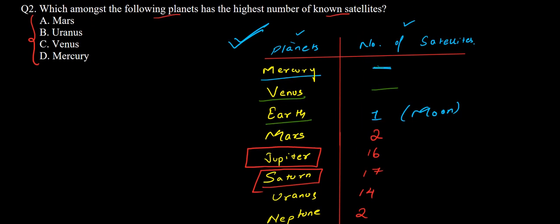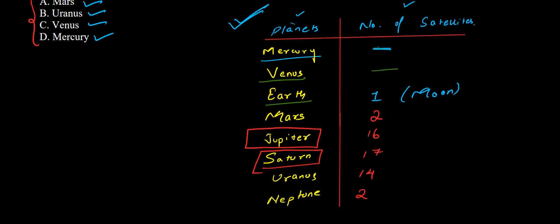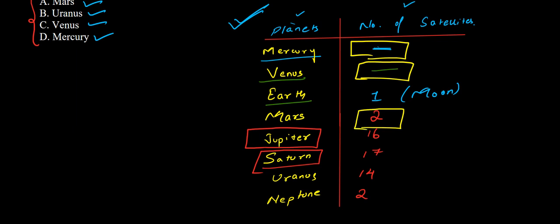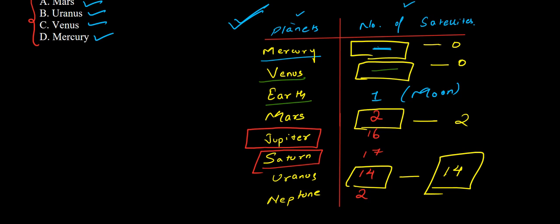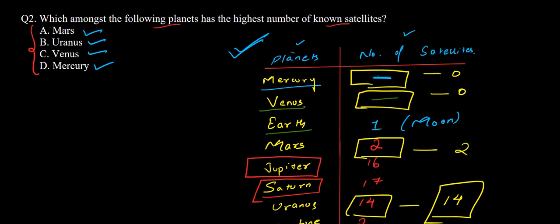Now let's check the options: Mars, Uranus, Venus, and Mercury. So you can see Mercury has zero, Venus has zero, Mars has two, and Uranus has 14. So 14 is the maximum number of satellites among our four options, which is for Uranus. Hence option B, that is Uranus, is the correct answer. Uranus has the maximum number of satellites out of these four options.